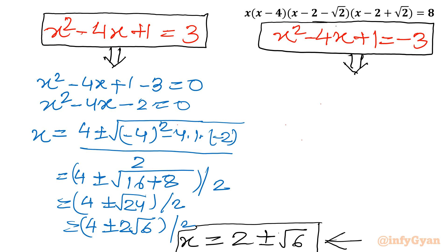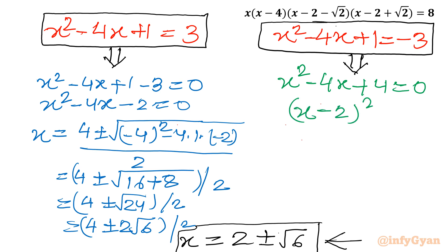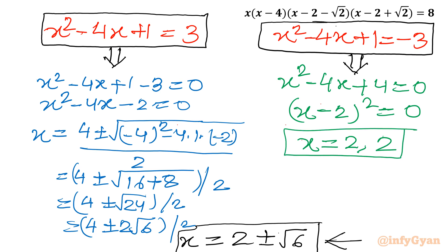Now for the second quadratic equation: x² minus 4x plus 1 = minus 3, which gives x² minus 4x plus 4 = 0. This is a perfect square: (x minus 2)² = 0, so x = 2 with multiplicity 2. Therefore there are 4 solutions, all real: x = 2 (with multiplicity 2) and x = 2 ± √6.